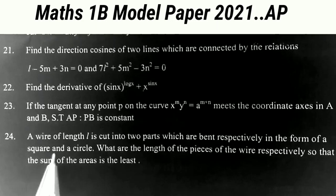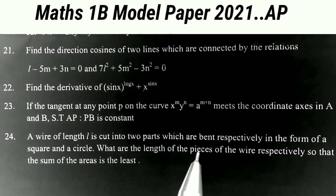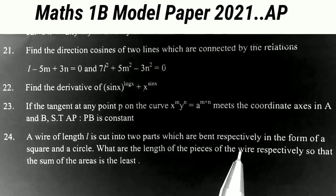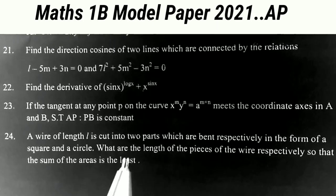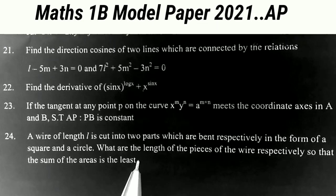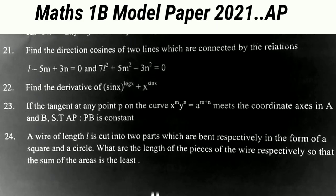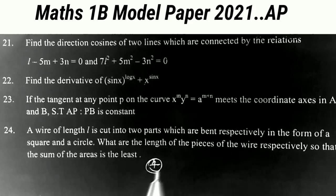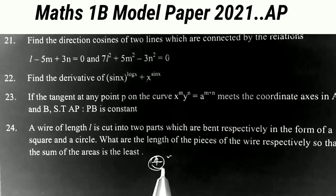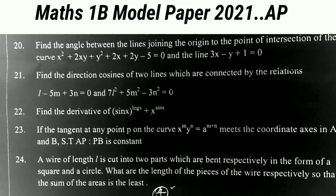The next one: a wire of length L is cut into two parts which are bent respectively in the form of a square and a circle. What are the lengths of the pieces of the wire so that the sum of the areas is the least? This is the maximum and minimum question. In the maximum and minimum topic we have only four important sums, and one problem comes in the examination from these four questions.